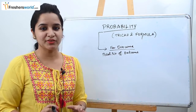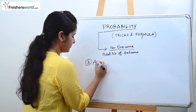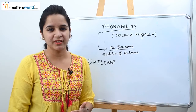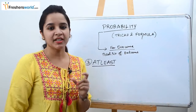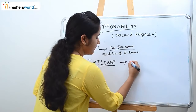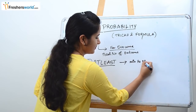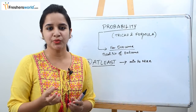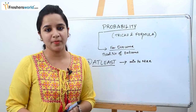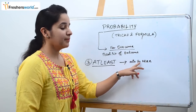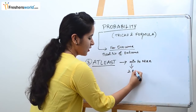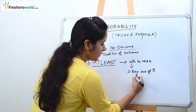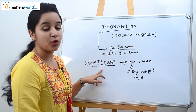The third trick is 'at least'. You would have faced a lot of questions in competitive exams asking 'at least'. The word itself shows it starts from minimum. Always remember: 'at least' means minimum to maximum. For example, if a question says choose at least two bags out of three, the minimum is two and the maximum is three — so you calculate the probabilities for both two and three.